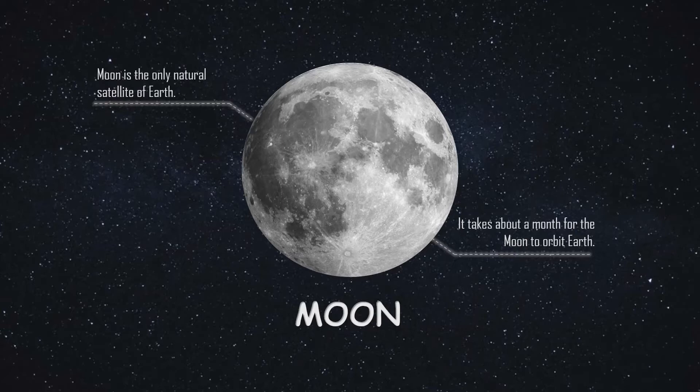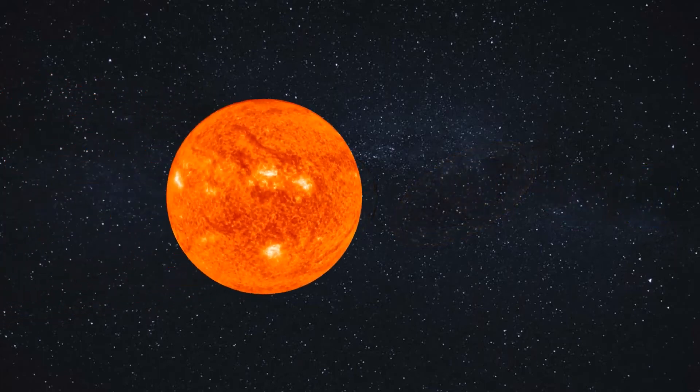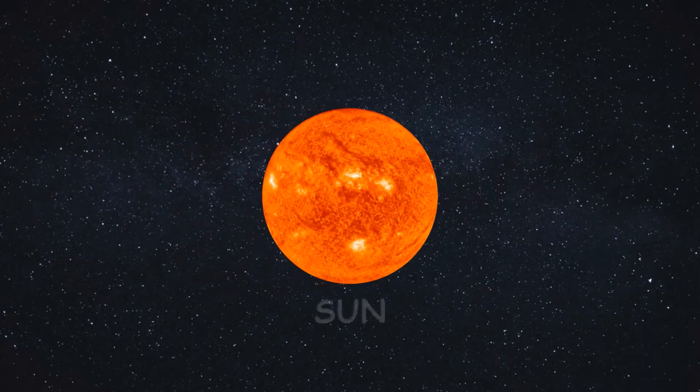Now let's use the moon to look around and see how other bodies look. This is our solar system. Our solar system has eight planets that revolve around the sun in their definite paths and at different speeds. We'll look at them one by one.